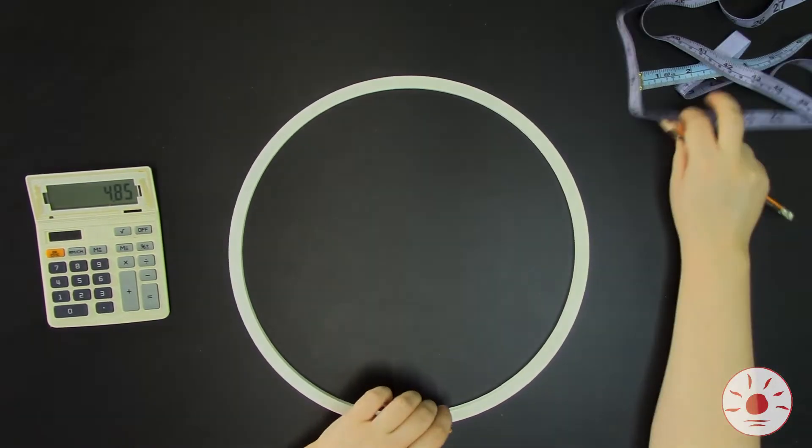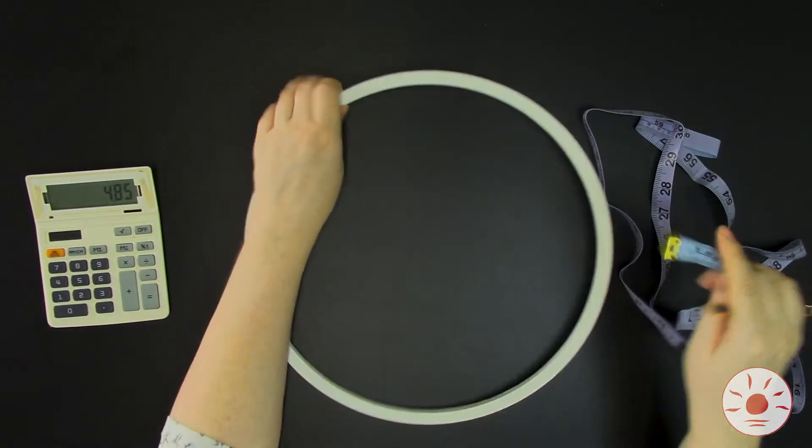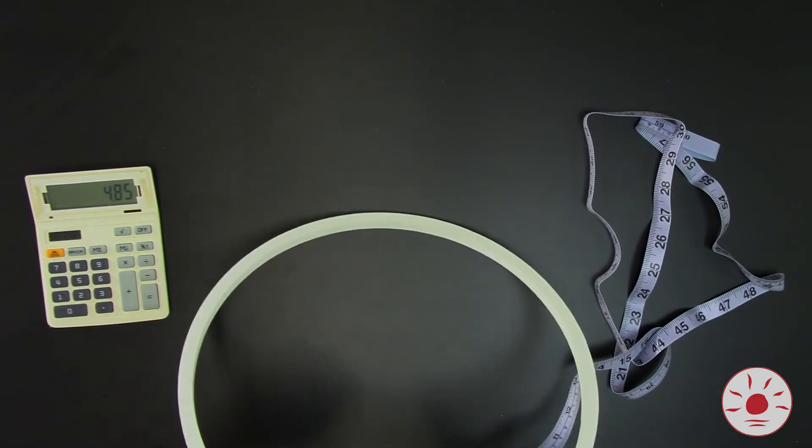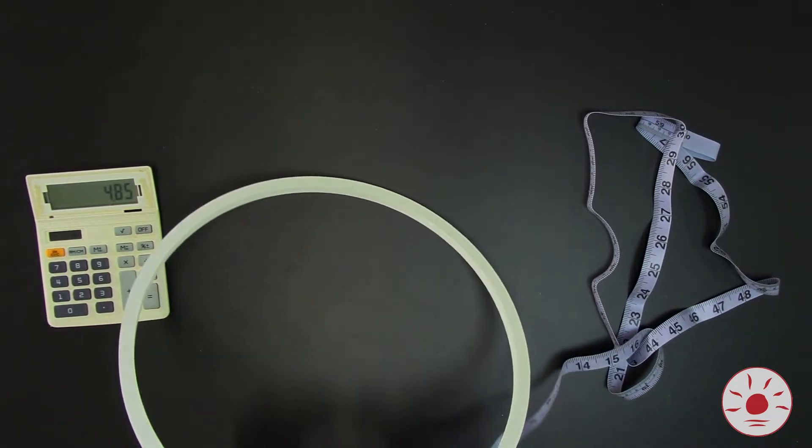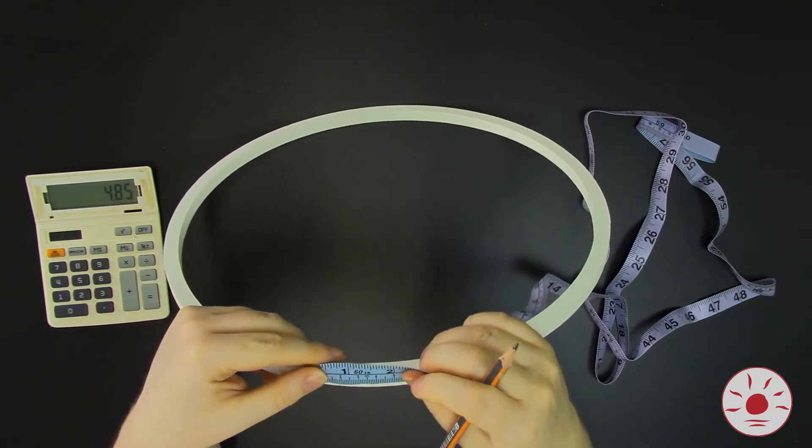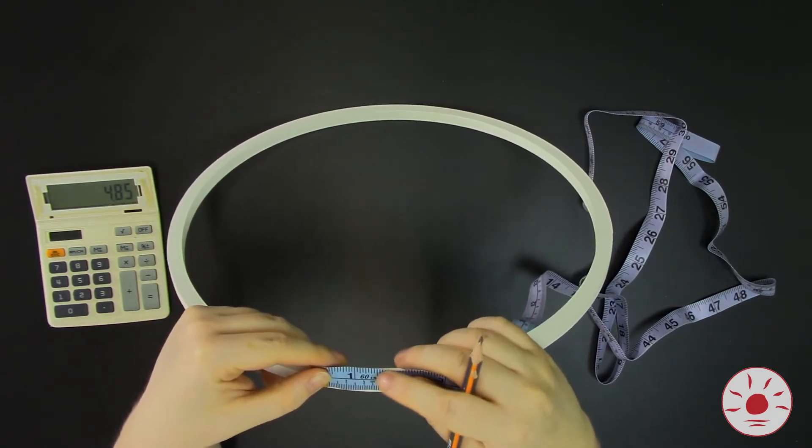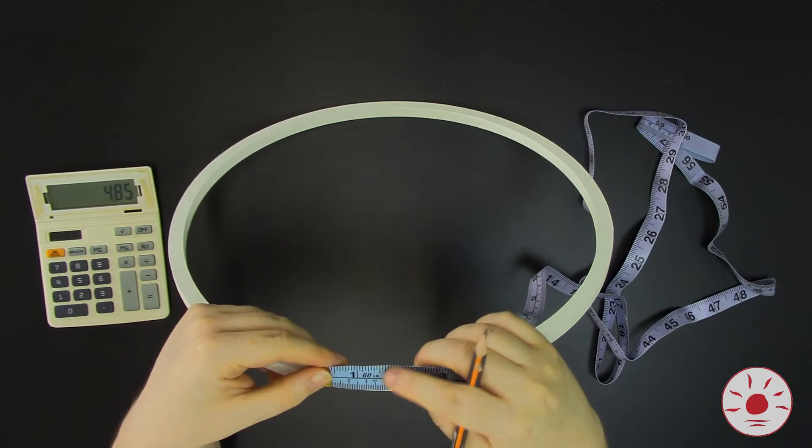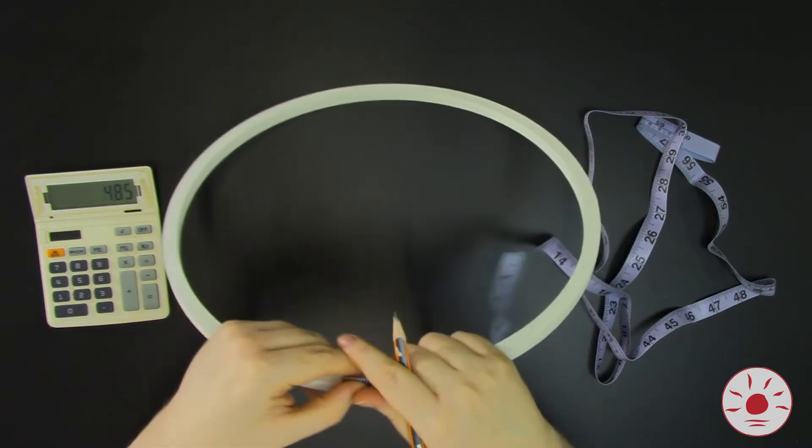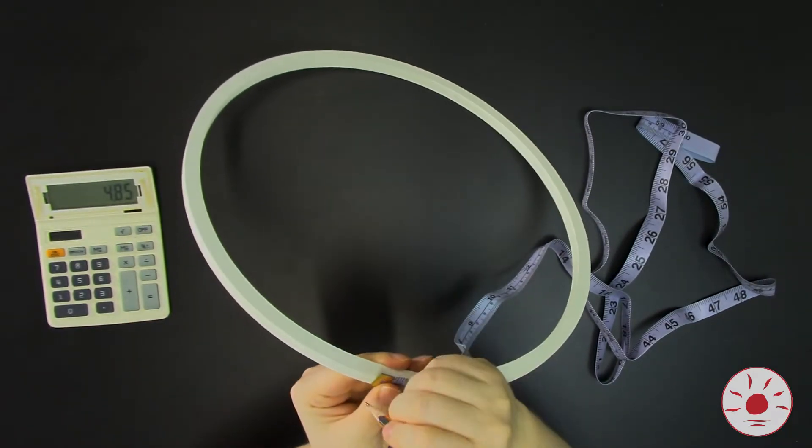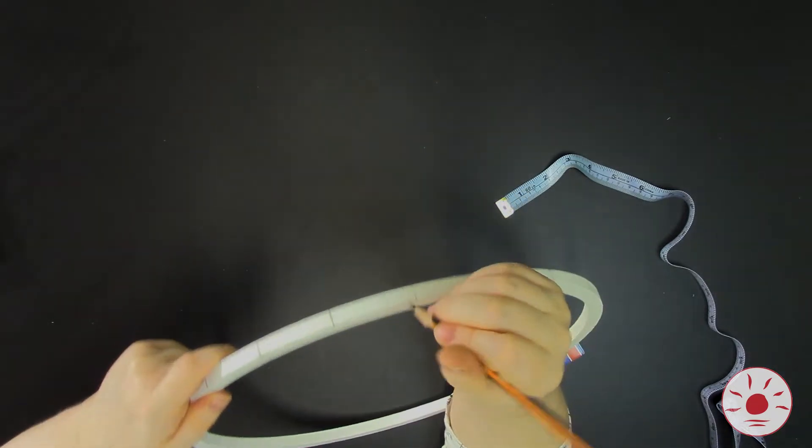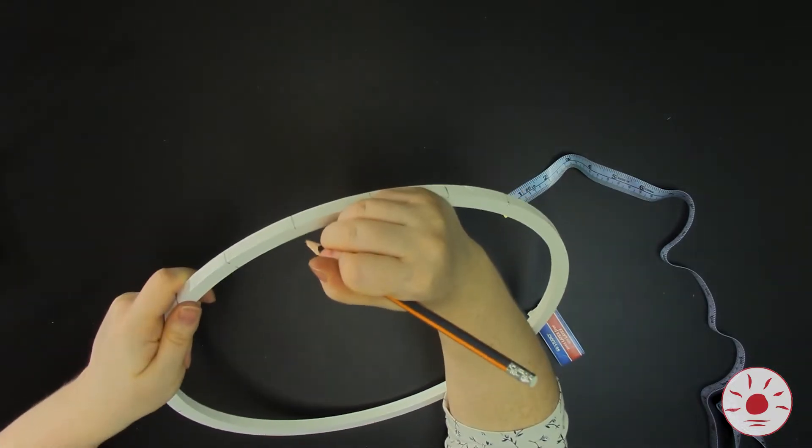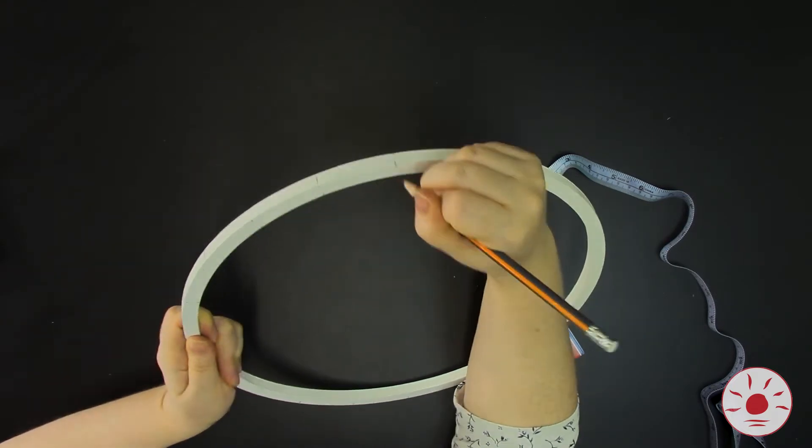Half a millimeter could be tricky to deal with, so you could either round up to 4.9 or round down to 4.8. It doesn't really matter what you do. So continuing with my measuring tape, I'm just going to measure these little individual segments of 4.8 centimeters and then I'm just going to make a line all the way around the edge and this way my hoop gets divided up into 20 equal segments.